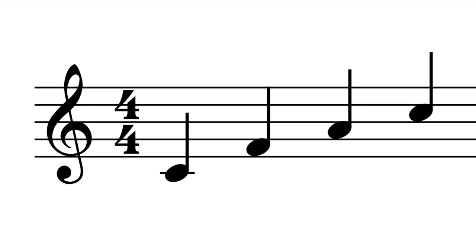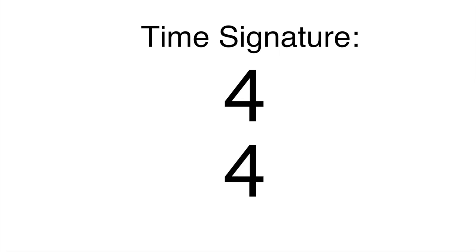In music, the time signature tells us the meter. It's usually at the beginning of the music. Most pieces of music have one meter, so they only have one time signature. The time signature has a top part and a bottom part.